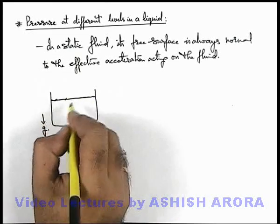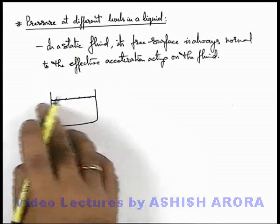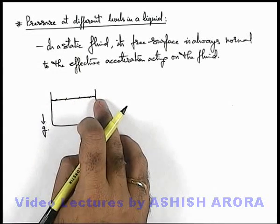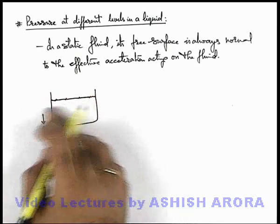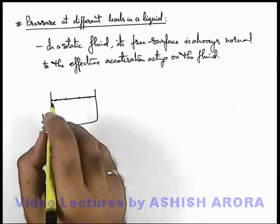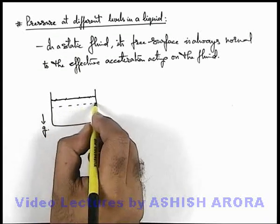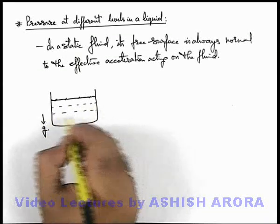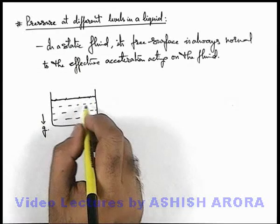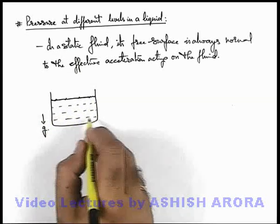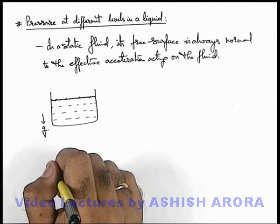All the points in the free surface must be at equal pressure, or we can say pressure at all these points must be equal, as the fluid is in equilibrium. Or we can simply state all the layers of this fluid which are parallel to the free surface of liquid will also have equal pressure at all points in a layer of fluid.